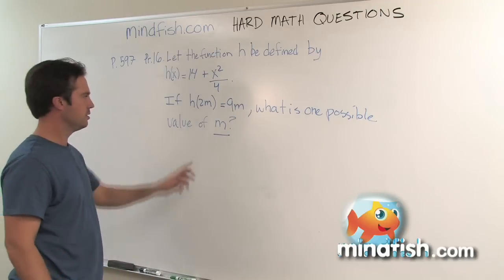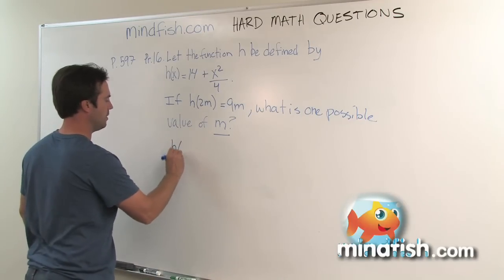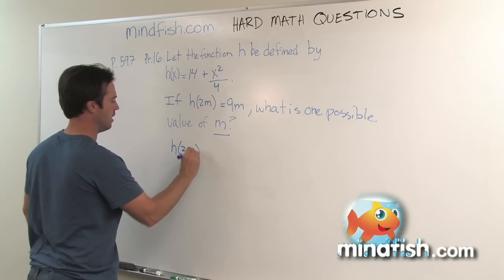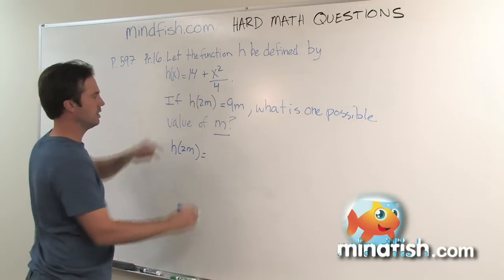So the first thing I have to do is understand what does h(2m) mean? Well, all h(2m) means is that the input is now 2m. So the input used to be x, and this was our equation.